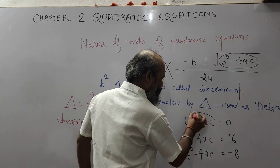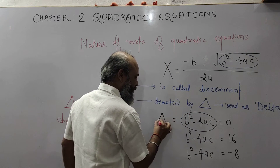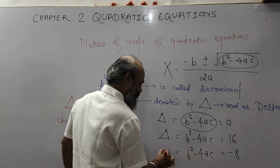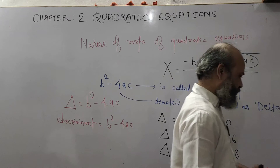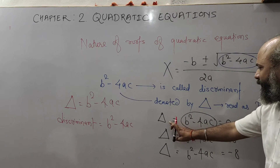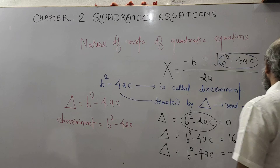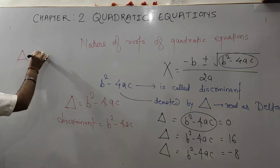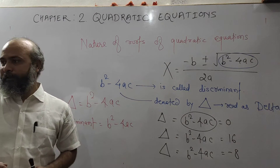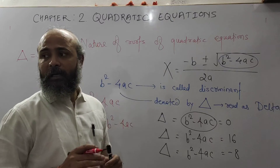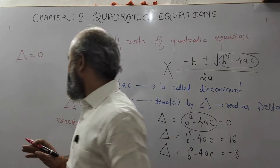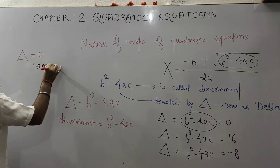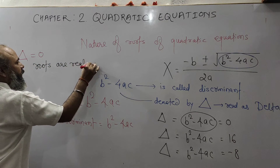B square minus 4AC is delta. When delta is equal to 0, you will say that the roots of the quadratic equation are real and equal. In the second case, delta is 16. Since 16 is greater than 0, delta is greater than 0, and when delta is greater than 0, the roots are real but not equal.